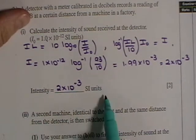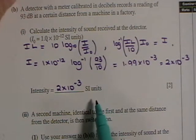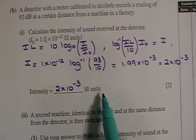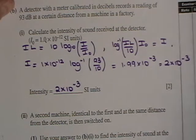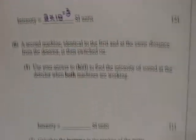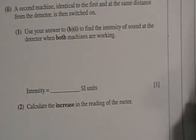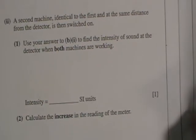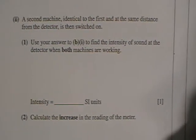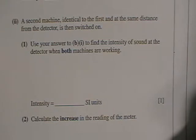And so the answer goes in here, it's 2 by 10 to the minus 3. And you can see there the written SI units. And that's because in the last part of the question, 3a, they asked you to give a unit. So they don't want to give away what the unit was here when they've asked you to write it down in the first bit of the question. A second machine identical to the first and at the same distance from the detector is then switched on. Use your answer to B part 1 to find the intensity of sound at the detector when both machines are working.